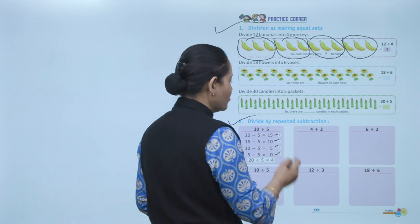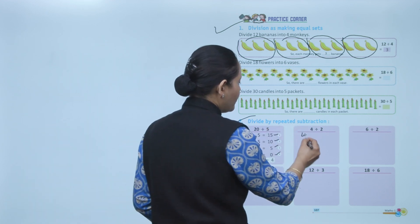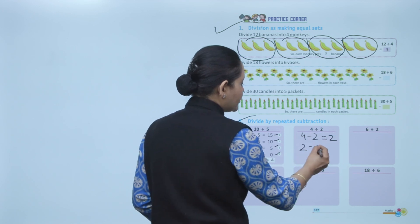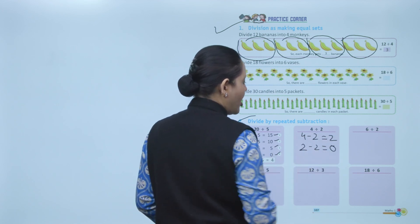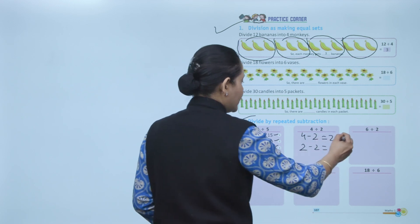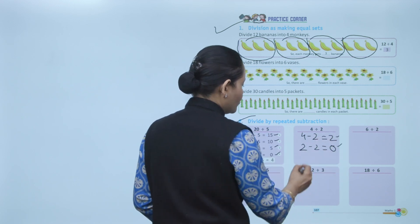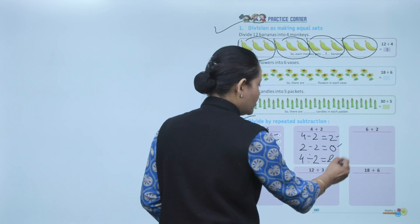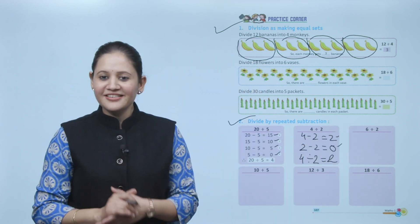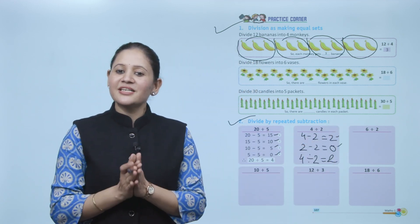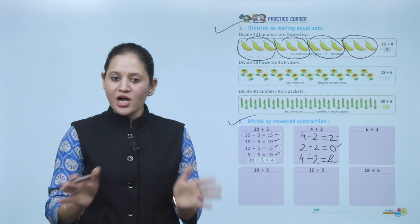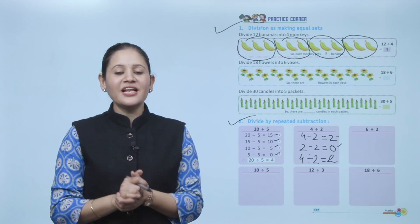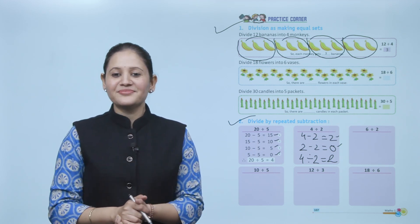Understand? Like here: four divided by two. Four minus two equals two — one time. Two minus two equals zero — two times. So how many times? One and two. So four divided by two equals two. Understand? So here we end the chapter. You have to practice all the questions of this chapter. I hope you understood it well — now you have to practice.